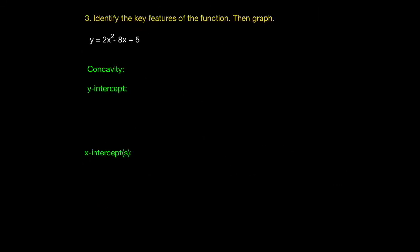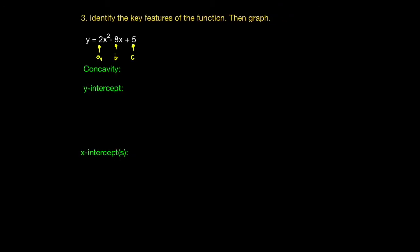Let's do another similar example. Here we have to identify the key features of the function and then graph. Identifying the key values: the a value is 2, the b value is negative 8, and the c value is 5. Beginning with the concavity — since the a value is positive 2, we have concave up. For the y-intercept of a quadratic in standard form, we get the coordinate (0, c), and the c value here is positive 5, so the y-intercept is (0, 5).